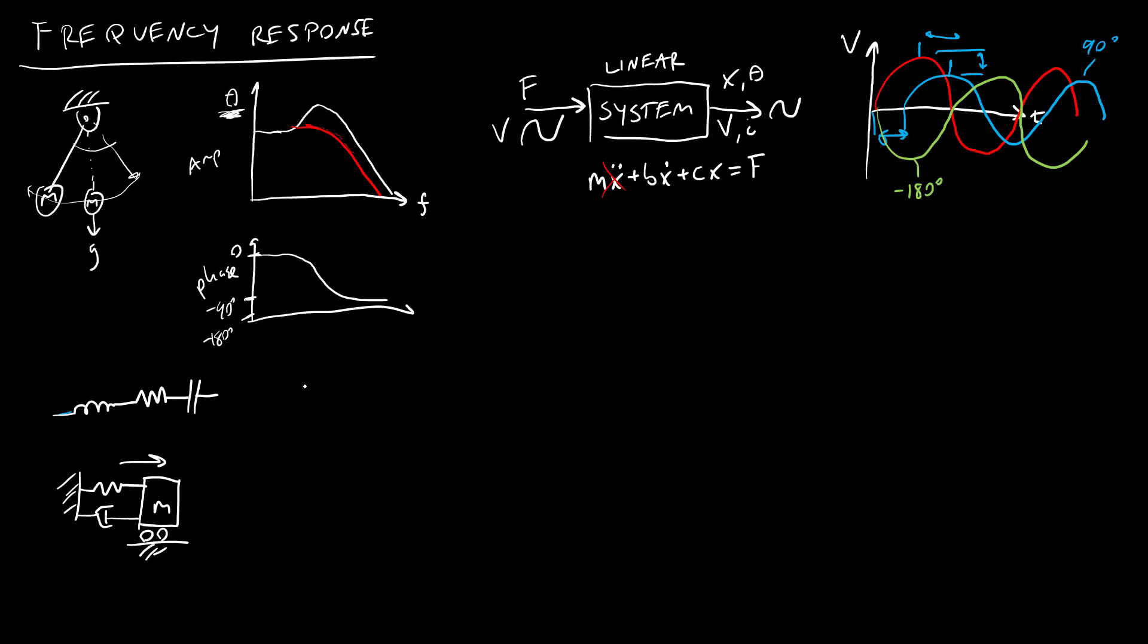But if you just have, as we're going to see in the next couple of videos, a first order system where there's just one energy storage element, like just a capacitor, then you're not going to have resonance, and your frequency response amplitude graph is just going to look something like this.